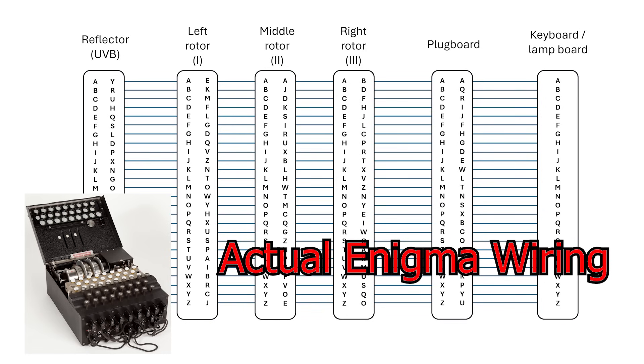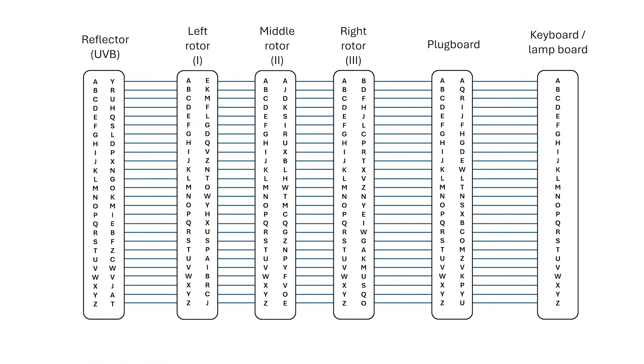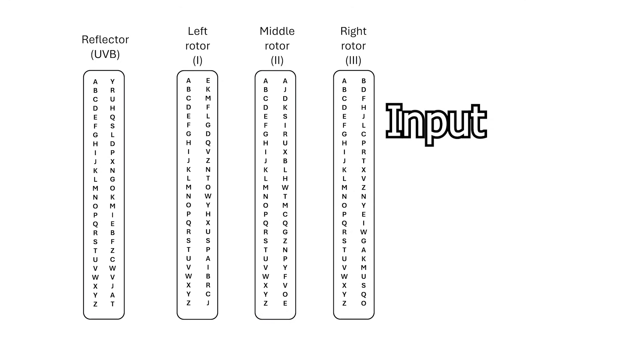We know that for the original Enigma, we had 26 wires connecting the rotors to the plugboard. Instead of using a binary representation for each letter, it used one's hot for the input, and one's hot for the output. An input voltage was applied to one wire, it would run through the rotors in one direction, hit the reflector board,